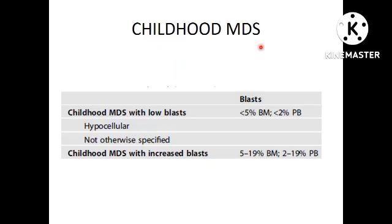Under childhood MDS, there are also 2 categories: childhood MDS with low blast and childhood MDS with increased blast. Childhood MDS with low blast is further divided into hypocellular MDS and childhood MDS with low blast not otherwise specified. The blast percentage thresholds are similar to adult MDS.